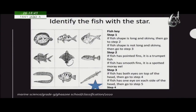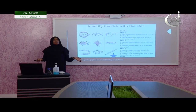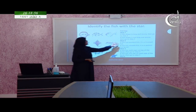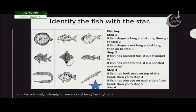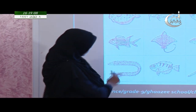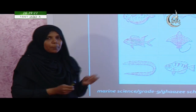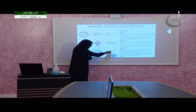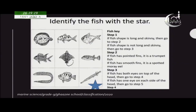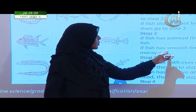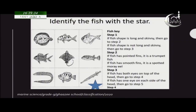These two long and skinny fishes go to step two. At step two, we look at a different feature — the fins. If the fish has pointed fins, it is a trumpet fish. The eel does not have pointed fins, but the other fish has a pointed dorsal fin. The one with smooth fins is the spotted moray eel.